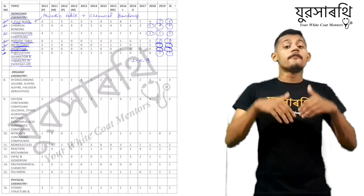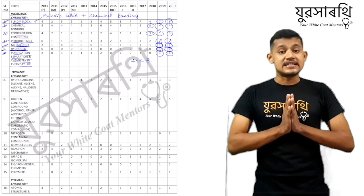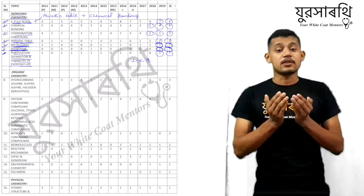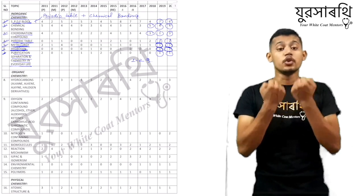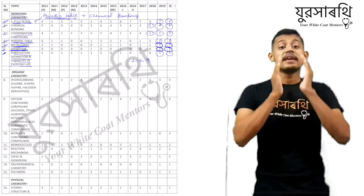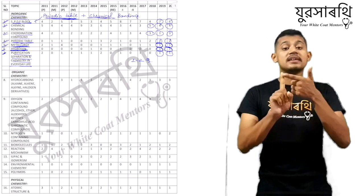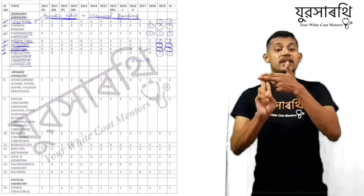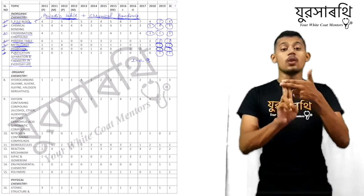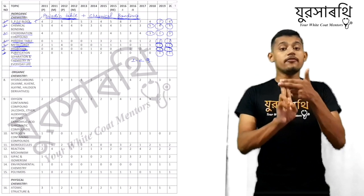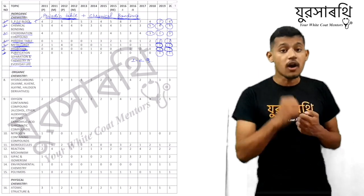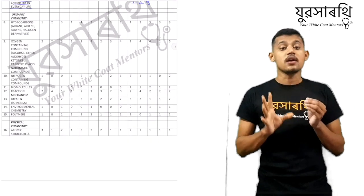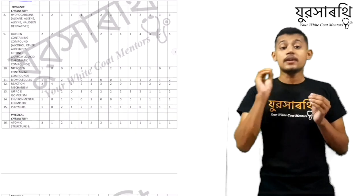So here I come to the end of the inorganic portion. The basic foundation we must understand in inorganic chemistry is the periodic table and chemical bonding — these two are the school of inorganic chemistry. If we have a good grip on the periodic table and chemical bonding, we can solve almost all the questions of the inorganic portion.